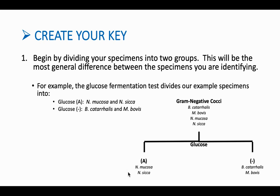We know that two were positive for acid. The proper nomenclature for our glucose fermentation test is 'A' if they produce acid. So we list the two organisms below. If something is negative for a fermentation test, or negative for a test in general, we write minus, and then list the two organisms that were negative below. In this case, we only had two groups and two options, so we only divide in two.